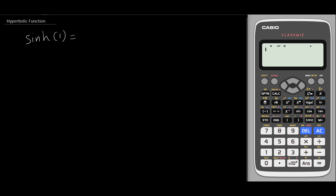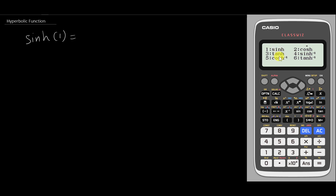If you type this into your calculator, it will tell you some value. In order to type the hyperbolic function for sine, cos, or tangent, just go to your calculator, type option, and you will see the hyperbolic function — type number 1. You have 6 options. So let's say I want to do hyperbolic sine. I type 1, and inserting the value 1 for hyperbolic sine, I get 1.1752.